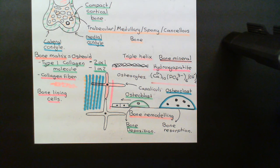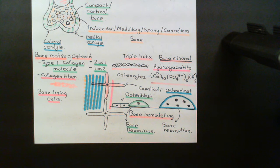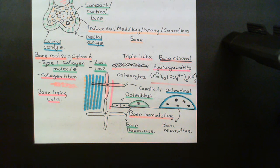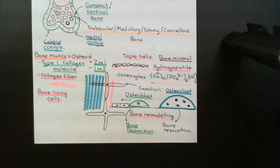Osteoclasts are continuously breaking bone down, and osteoblasts are going behind the osteoclasts and remaking that bone. This is a continuous process all over the body, and normally it is in equilibrium — the rate at which osteoclasts break bone down is matched by the rate at which osteoblasts reform it. What parathyroid hormone and the activated form of vitamin D, 1,25-dihydroxyvitamin D, are going to do is shift that balance by increasing osteoclast activity so that it dominates over osteoblast activity, resulting in net bone resorption and releasing calcium into the bloodstream.